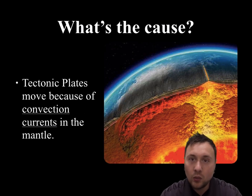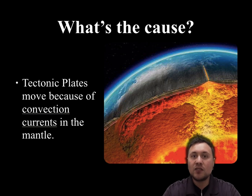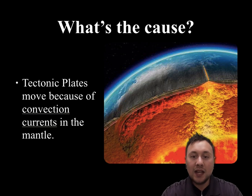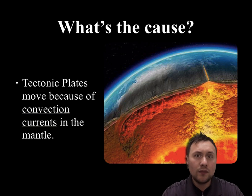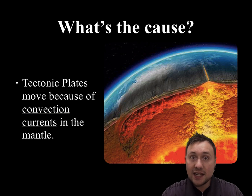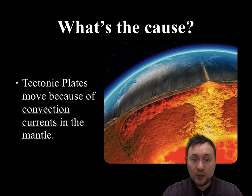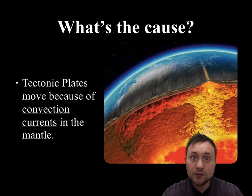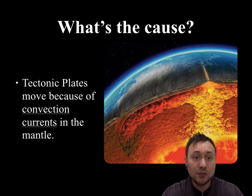What's the cause? What did Wegener not have to be able to explain this? How did we get from an idea of continental drift — the drifting continents — to a full theory of plate tectonics? We needed that cause, that mechanism. Now we understand what causes plates to move: tectonic plates move because of convection currents in the mantle.